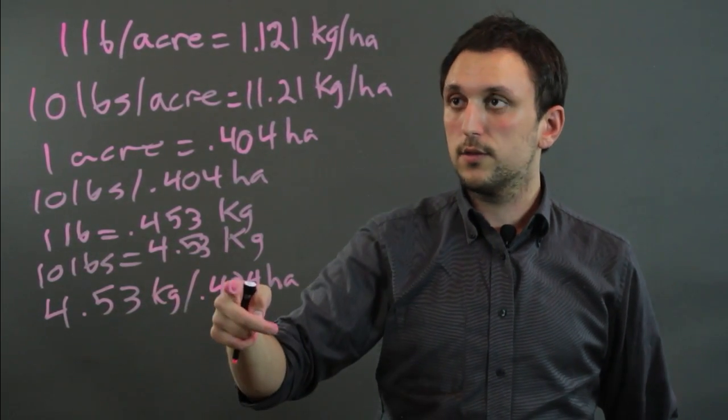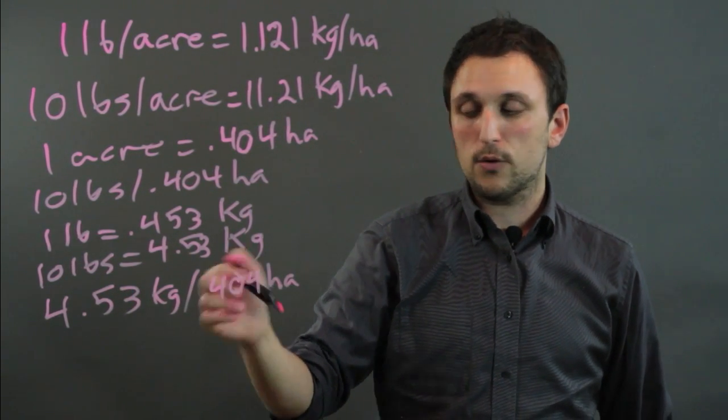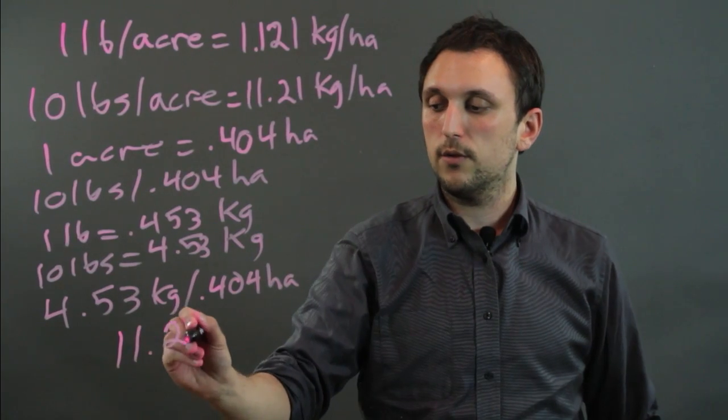So we want this to be 11.21. Well when you divide 4.53 by 0.404 you get 11.21.